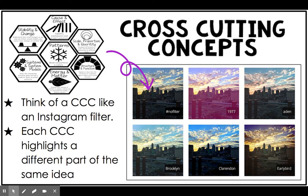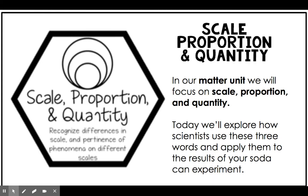When we look at our soda can phenomena, we're going to be looking at it through the lens of scale, proportion, and quantity. We are going to be looking at how the scale of what we're doing is affected by what we can see and what we can't see, how the proportions or amounts of things affect the results of our can, and how the quantities that we add or take away from your experiment affect our can.